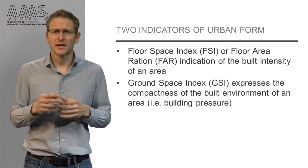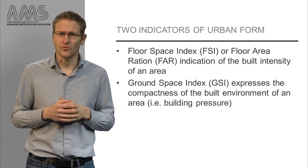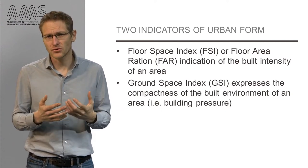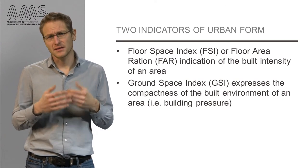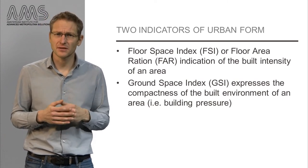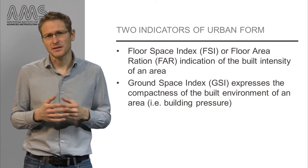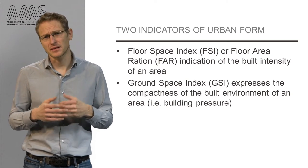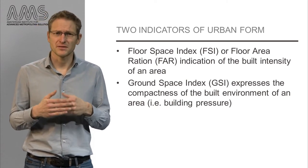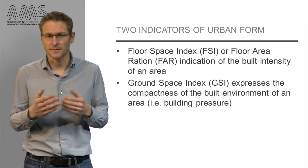There are two indicators that can be used to assess the urban form. The floor space index, or the floor area ratio, gives an indication of the build intensity of an area. The ground space index expresses the compactness of the built environment of an area — the built pressure.